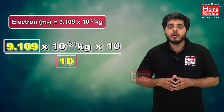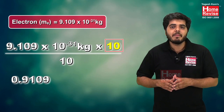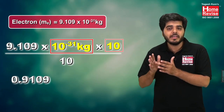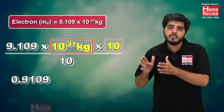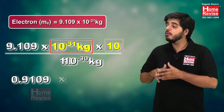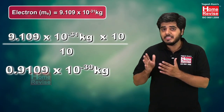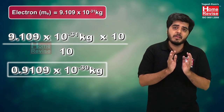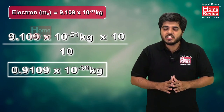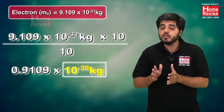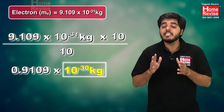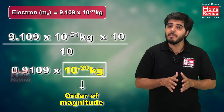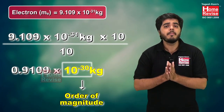To bring it into range, we multiply by 10 and divide by 10. Dividing 9.1 by 10 gives 0.91, and multiplying 10⁻³¹ by 10 (i.e., 10¹) gives 10⁻³¹⁺¹ = 10⁻³⁰. So the value becomes 0.91 × 10⁻³⁰. Check the range: 0.91 is greater than 0.5 and less than 5 — it is in range. Therefore, the order of magnitude of the mass of an electron is 10⁻³⁰ kg.